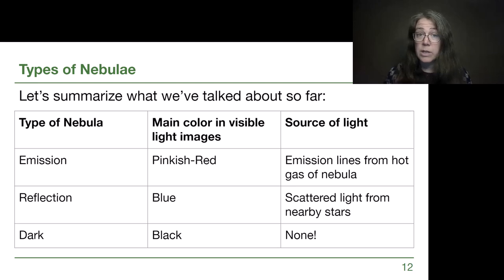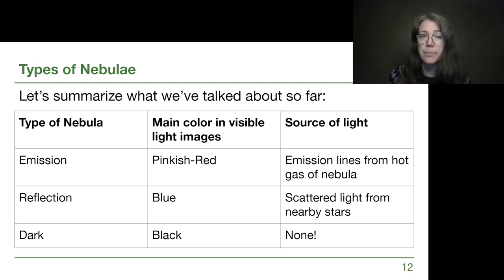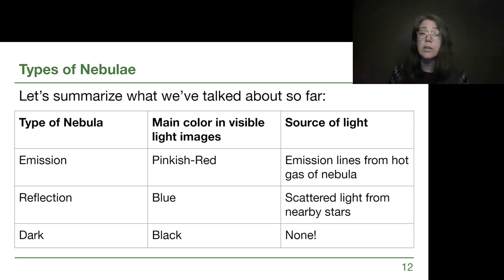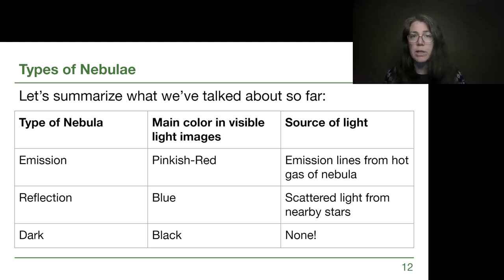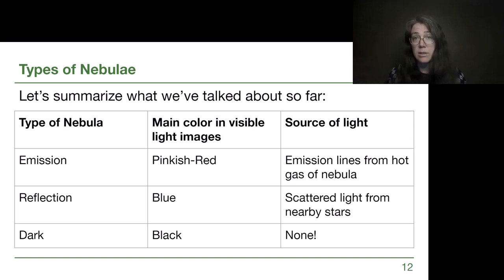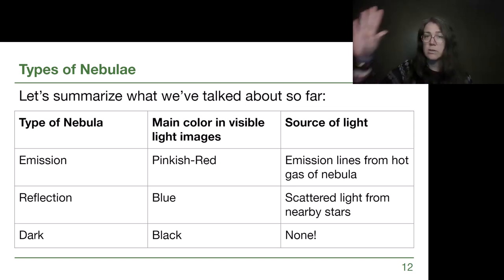Color in visible-light images does a really good job of separating these different types of diffuse nebulae, and that color gives us hints about the source of light causing each nebula to be visible. For an emission nebula, it is visible because the gas itself is glowing. For a reflection nebula, it is visible because dust is being lit up by nearby stars. A dark nebula is usually visible because it is blocking an otherwise uniform field of stars.